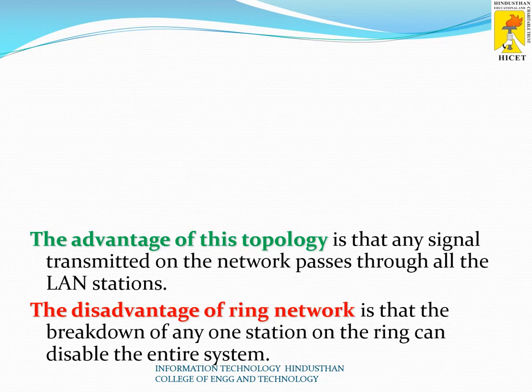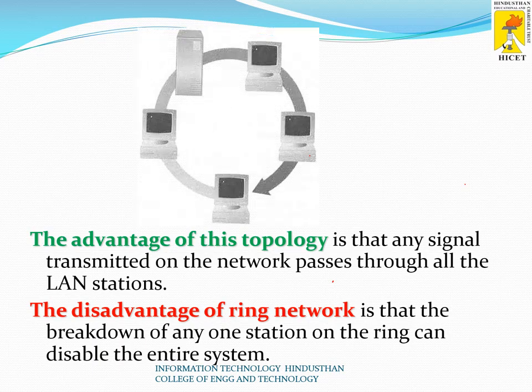In ring topology, all systems can open the message as it passes — this is one feature of the topology. The advantage is that the signal transmitted on the network passes through all LAN stations. The disadvantage is that a breakdown of any one station on the ring can disable the entire network. If there is a failure in one particular system, all other systems will be affected.